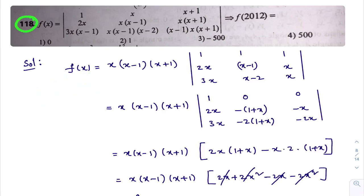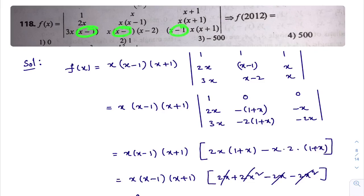Now observe question number 118. They have given f(x) equal to a determinant, and we need to calculate f(2012). In the second column, x appears in all three rows, so I can take x common from the second column. In the third row, (x−1) appears in all elements, so I take (x−1) common from the third row. From the third column, I take (x+1) common.